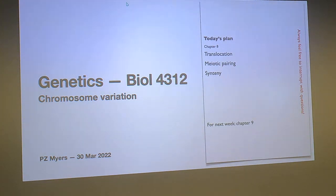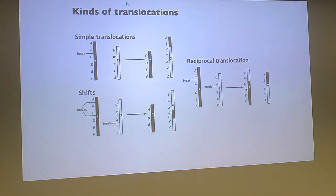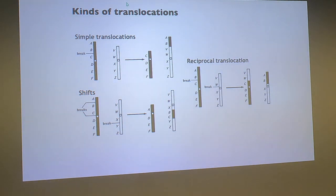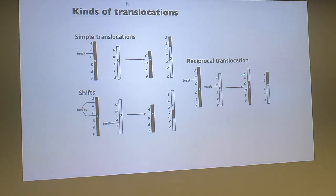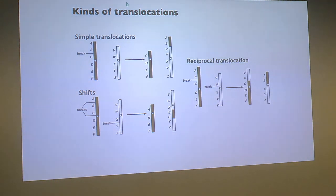Now we're going to talk about translocations. Here's a diagram illustrating them. Translocations basically mean you take a chunk of a chromosome, break it off, and put it somewhere else. Here's a reciprocal translocation where we swap bits and pieces of chromosomes. We also get shifts where we move a piece of a chromosome to somewhere else in another chromosome, not necessarily at the ends.